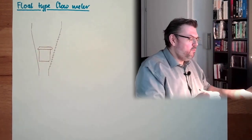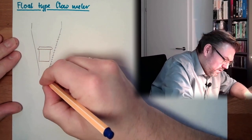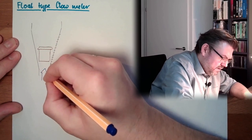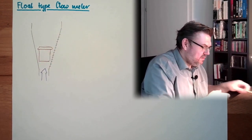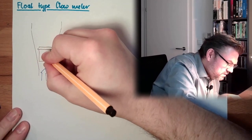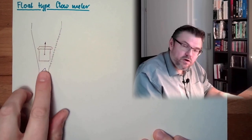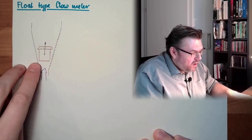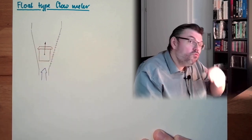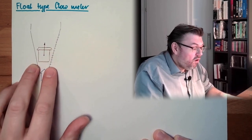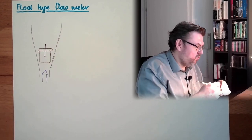And whenever there is fluid, usually gases or whatever, streaming in here, this will be lifted because there is pressure coming and until this gap here is big enough that this current volume flow of fluid can pass this floater. So this is a floater.